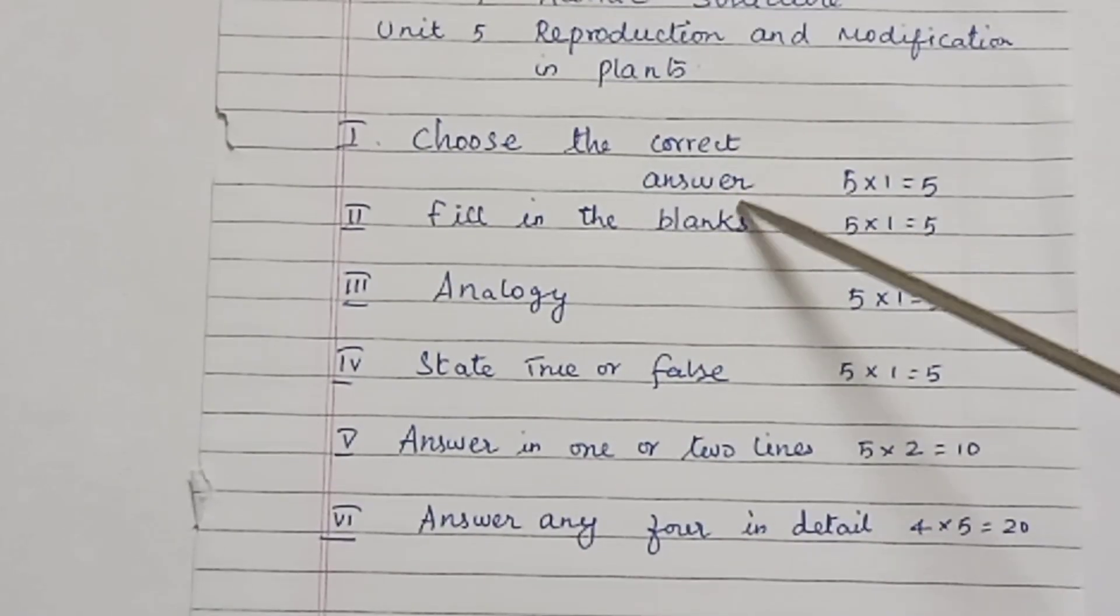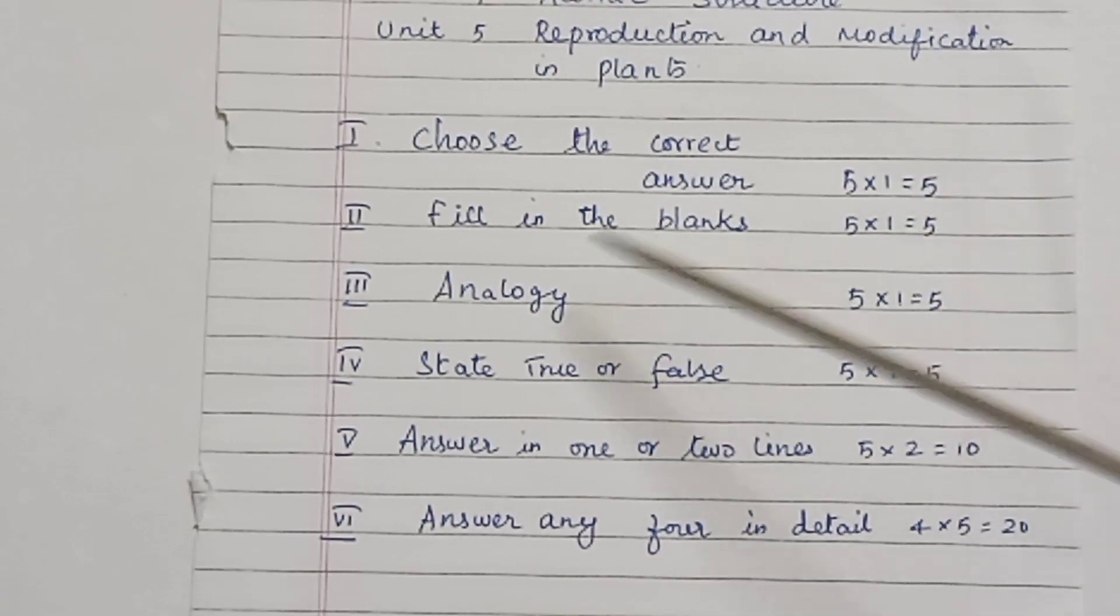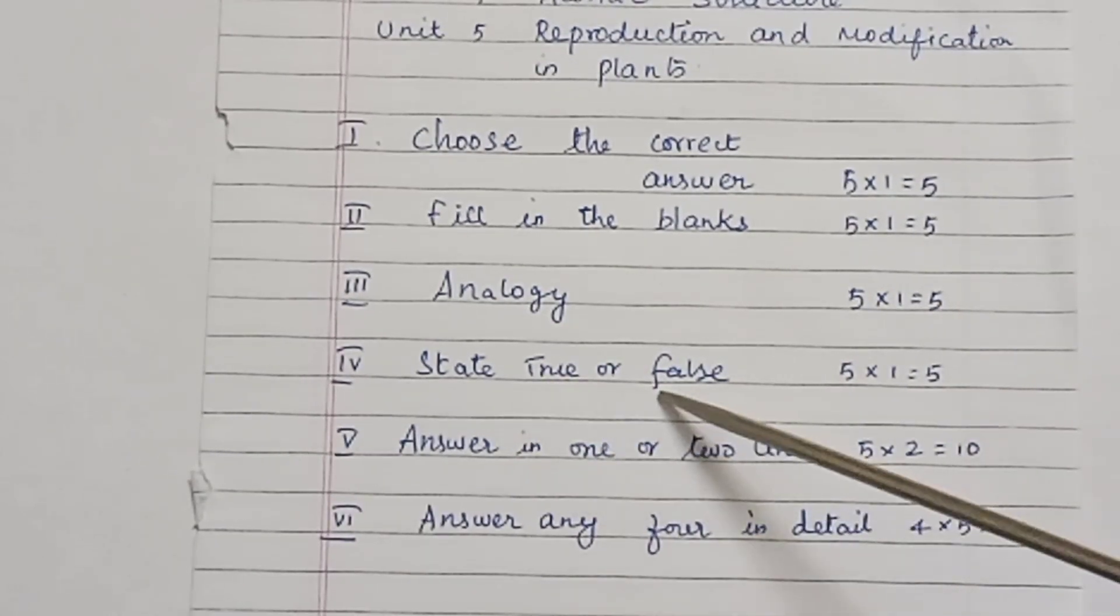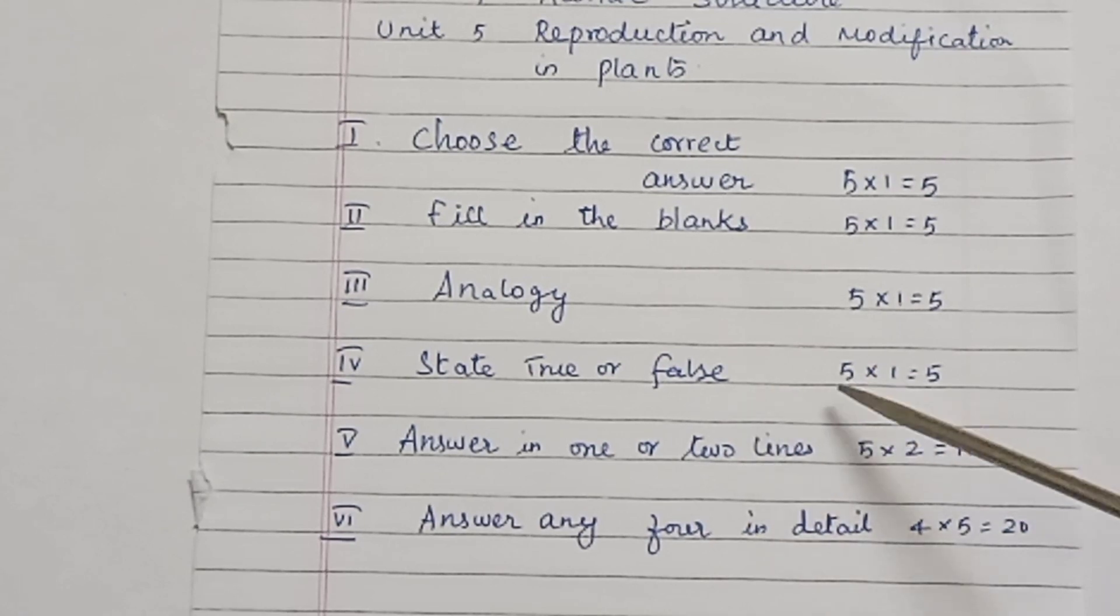Format 1: Choose the correct answer, 5 into 1 equals 5 marks. Format 2: Fill in the blanks, 5 into 1 equals 5 marks. Format 3: Analogy, 5 into 1 equals 5 marks. Format 4: State true or false, if false correct the statement, 5 into 1 equals 5 marks. Format 5: Answer in one or two lines, any 5 you have to write, 5 into 2 equals 10 marks. Format 6: Answer any four in detail, 4 into 5 equals 20 marks.